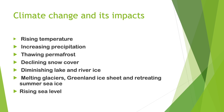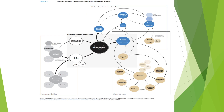Climate change and its impact include: rising temperature, increasing precipitation, thawing permafrost, declining snow cover, diminishing lake and river ice, melting glaciers, Greenland ice sheet and retreating summer sea ice, and rising sea level. This figure explains the climate change processes, characteristics and threats.